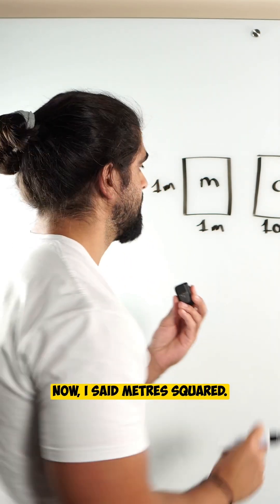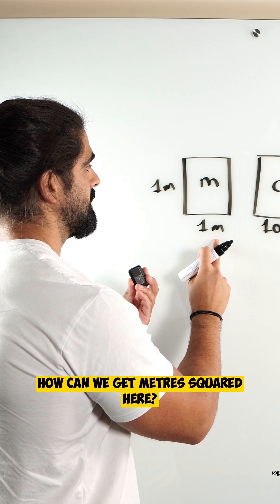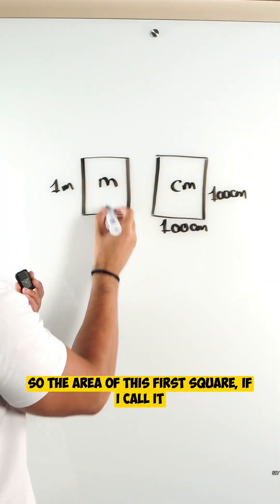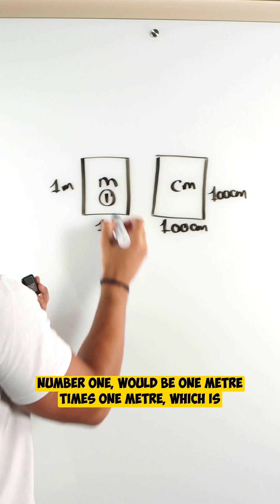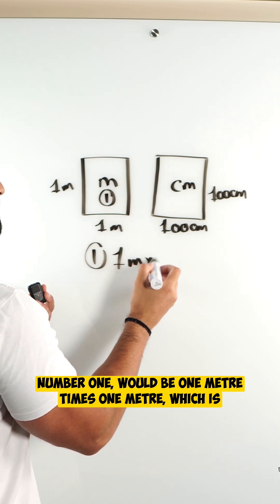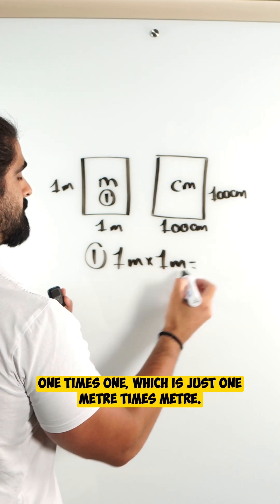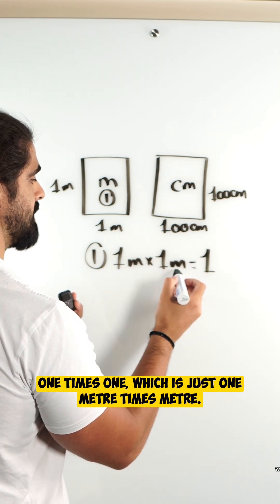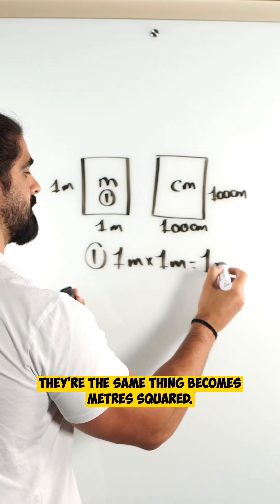Now I said meters squared. How can we get meters squared here? It's by finding the area. So the area of this first square would be one meter times one meter, which is one times one, which is just one. Meters times meters becomes meters squared.